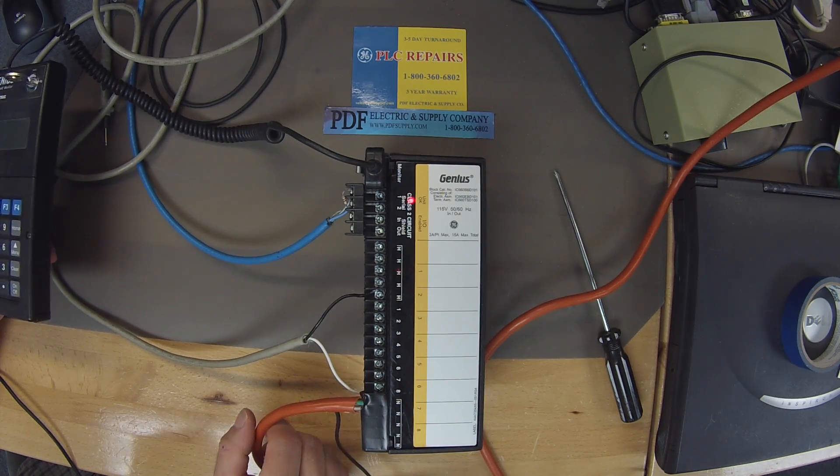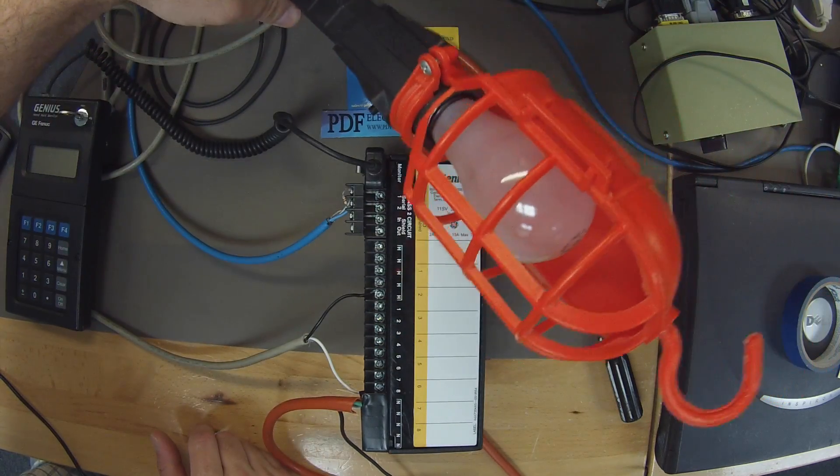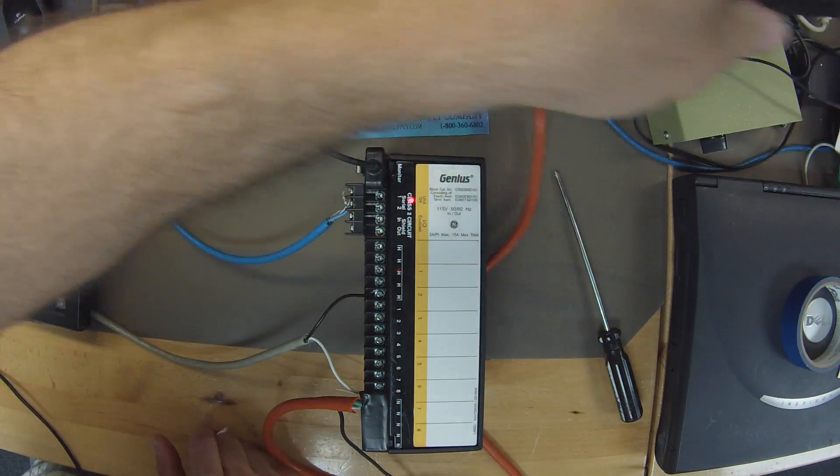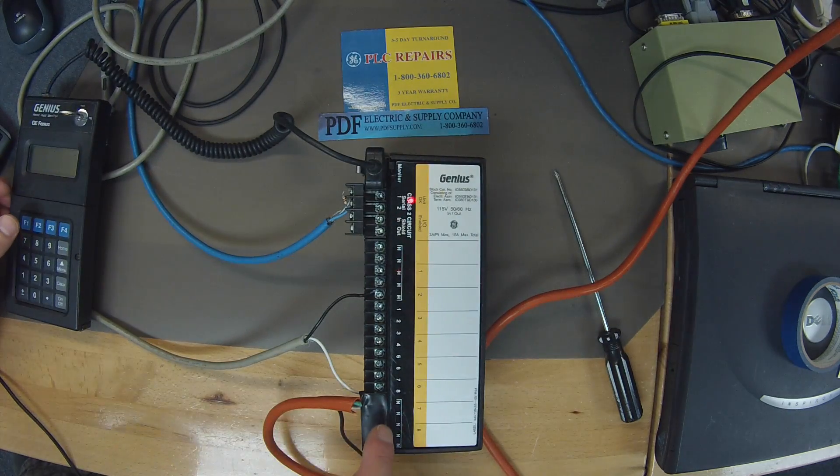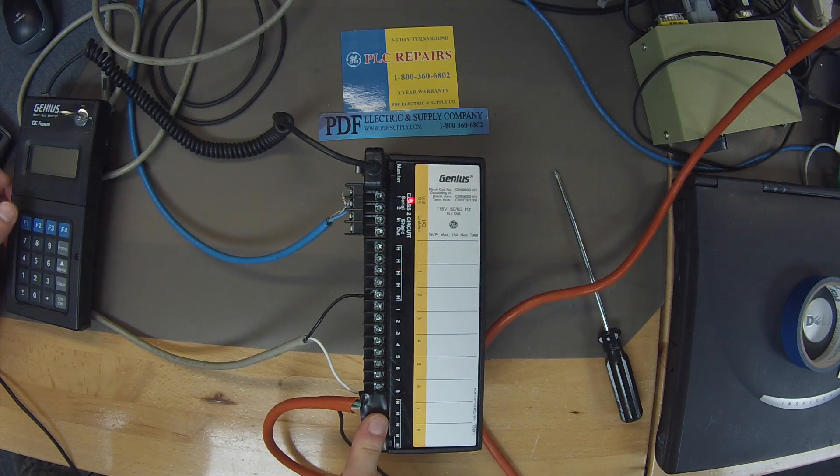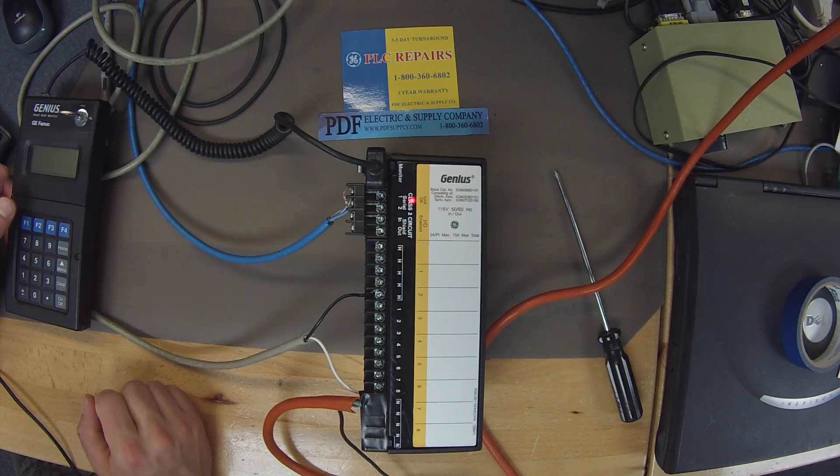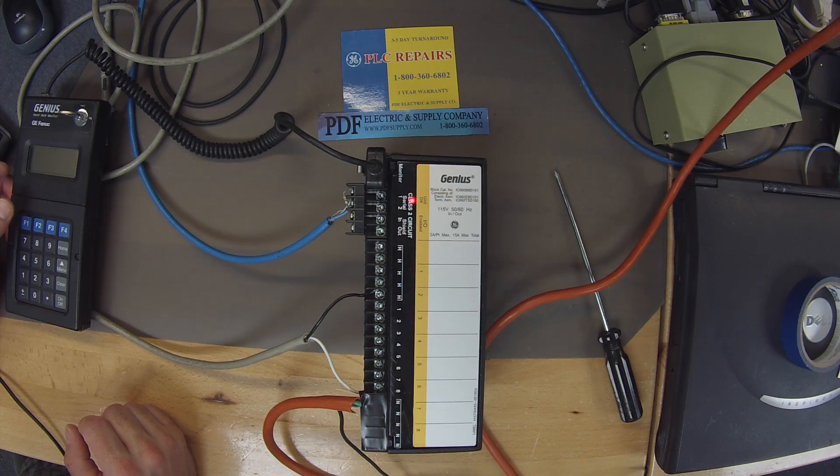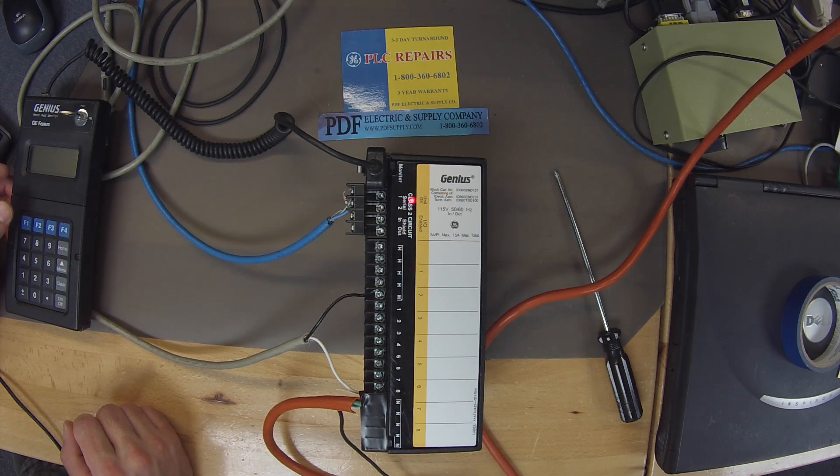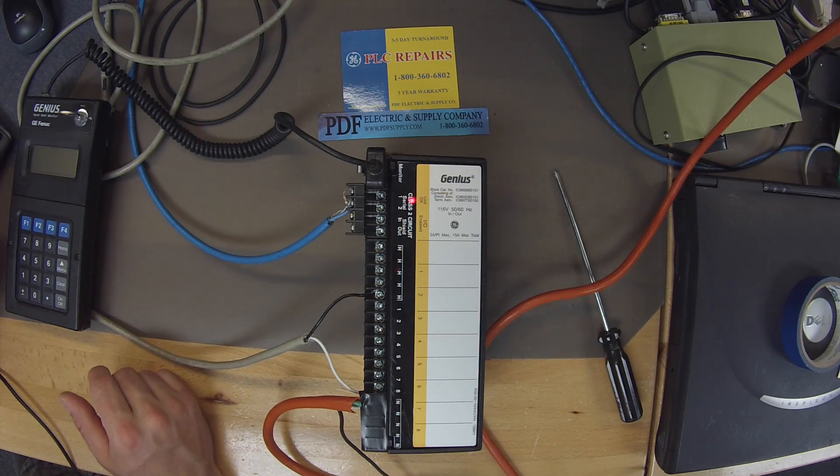Now I also have connected to this a mechanic's drop light. My neutral lead from the drop light is connected right next to my neutral lead from my power input. What I'm going to use that for is to test our outputs. Every time I touch the probe of the hot lead from the light to the inputs, I should be getting a response, basically the light should light up. That's an easy way to test it.